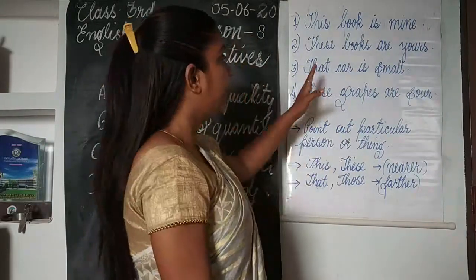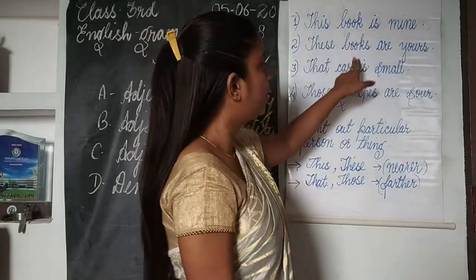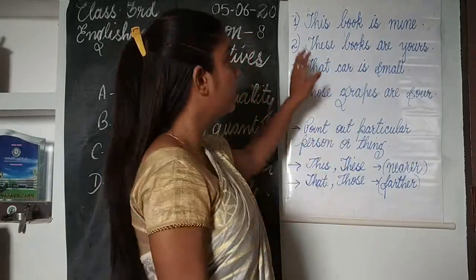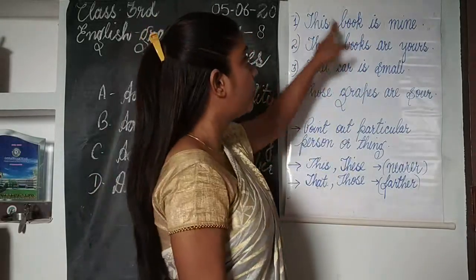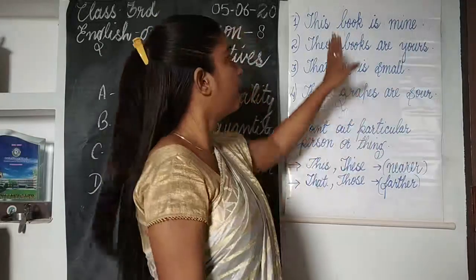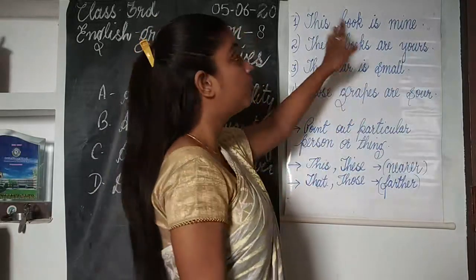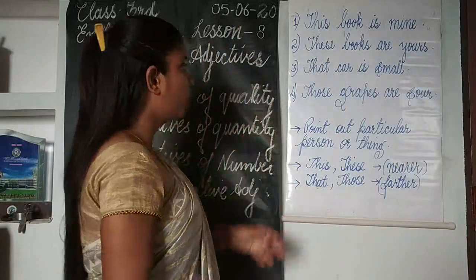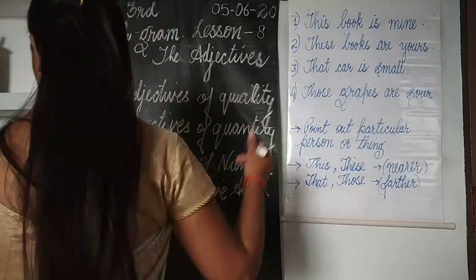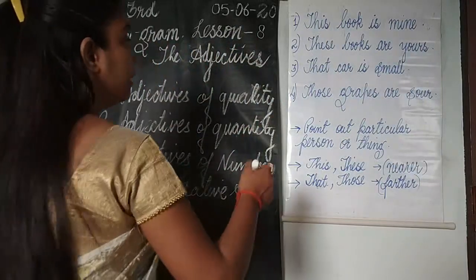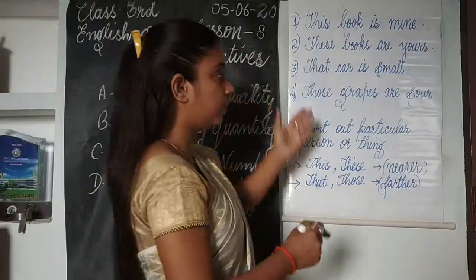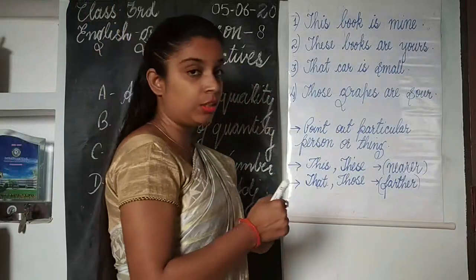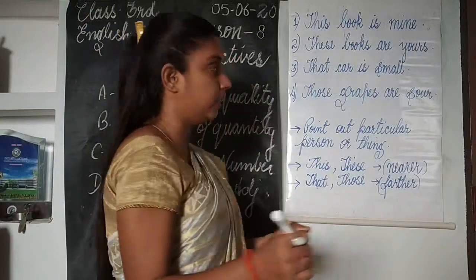These adjectives are always used before a noun. They always point out a person, place, animal, or thing, so they are always used before a noun. I have written four sentences here — let's see what the demonstrative adjectives in these four sentences are.